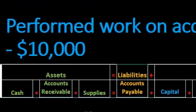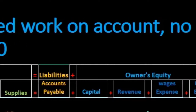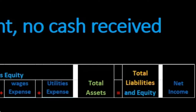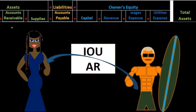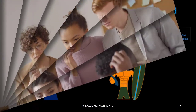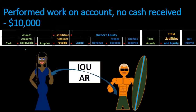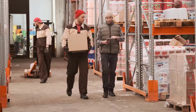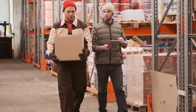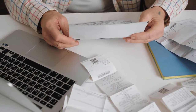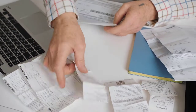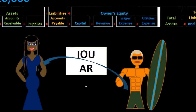The first transaction: we performed work on account — no cash received. Typically we're looking at a service company, like a law firm or bookkeeping firm. We've done work and are basically invoicing the client. That's the typical flow for industries where work is done and then the client is invoiced. The client has an IOU at this point — nothing tangible has taken place other than possibly an invoice going from us to the client, but no money has exchanged hands.